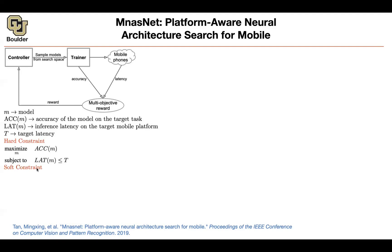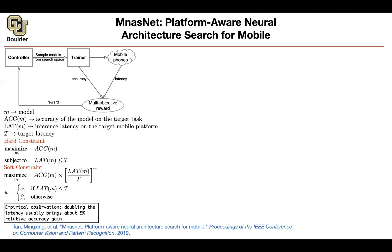We can have a hard constraint: maximize accuracy subject to latency being bounded by the target latency. Or alternatively you can have a soft constraint — you're going to balance the trade-off between latency and accuracy using omega. So I'm going to introduce a parameter, and we just saw this formula in the previous paper for EfficientNet, so they are exactly using this formula. The question is what is going to be your omega: if your latency is smaller than some threshold you should be fine, and if it is bigger than the threshold you need to penalize more.